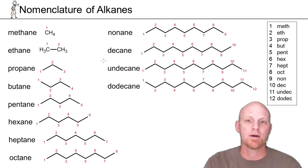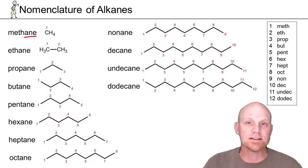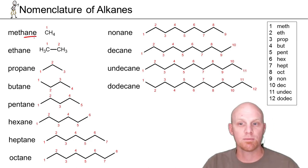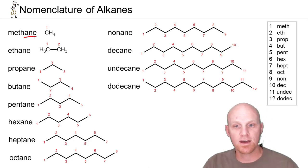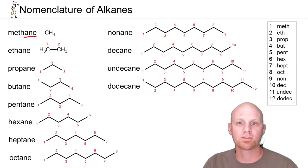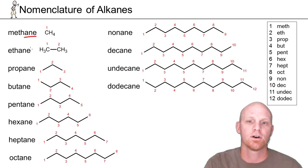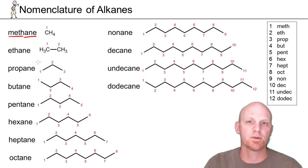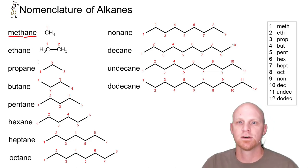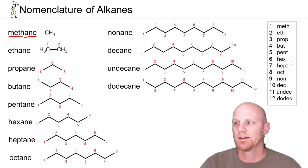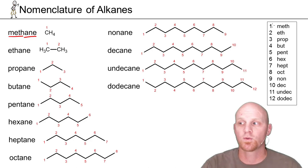When we name alkanes, we always name them with an -ane suffix — so methane, ethane, propane, and so on. The prefix we put out front depends on the number of carbons in the chain, and you need to have 12 prefixes memorized.